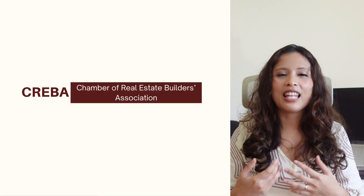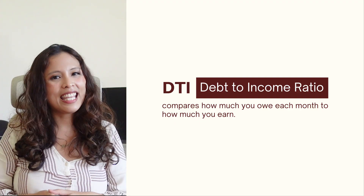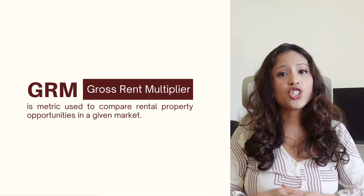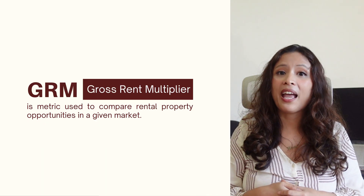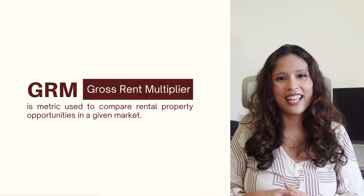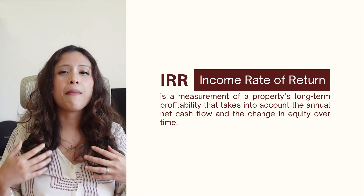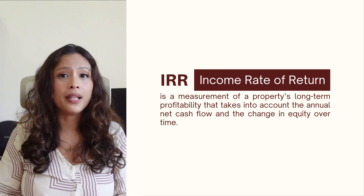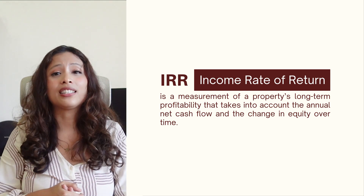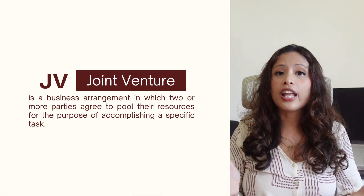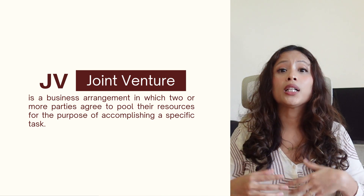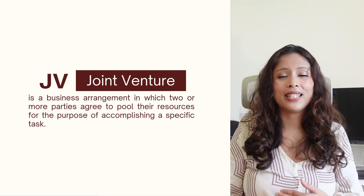CREBA, for Chamber of Real Estate Builders Association. DTI, for Debt to Income Ratio, compares how much you owe each month to how much you earn. GRM, for Gross Rent Multiplier, is a metric used to compare rental property opportunities in a given market. IRR, for Internal Rate of Return, is a measurement of a property's long-term profitability that takes into account the annual net cash flow and the change in equity over time. JV, for Joint Venture, is a business arrangement in which two or more parties agree to pool their resources for the purpose of accomplishing a specific task.